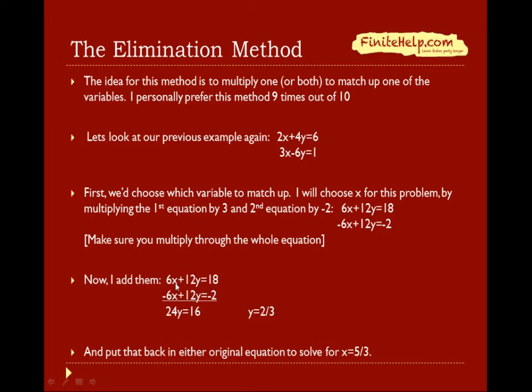Now that I've matched up the x, I simply add these two equations. The six x and negative six x cancel out. And then, I have 24y equals 16. Divide the 24 over. I have y equals two-thirds again. And now, I can just plug this two-thirds into either one of these equations and solve for the x. And x is going to come back out to be five-thirds, which is the exact same answer as we got from the substitution method.